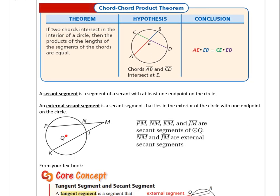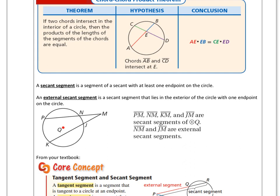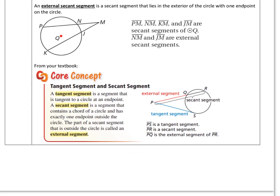A bit of vocabulary: a secant segment is a segment of a secant with at least one endpoint on the circle. An external secant segment is a secant segment that lies in the exterior of a circle with one endpoint on the circle. And tangent segments — a tangent is a line that just touches, so a tangent segment is just the segment of it. The whole secant segment is the full thing, and the external segment is just the outer portion.